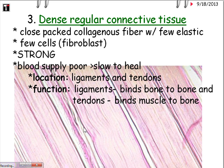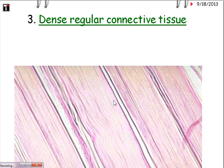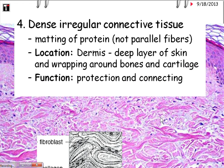Ligaments bind bone to bone, and tendons bind muscles to bone. Now let's look at dense irregular connective tissue. Notice that the proteins are jumbled up — they are not parallel but matted. Its location is the deep layer of skin, the dermis, and it is also found around bones and cartilage. The function is protection and connecting. You can see some stratified squamous epithelium above it, which is keratinized because all of the nuclei have disappeared, coming down into the dense irregular connective tissue below.